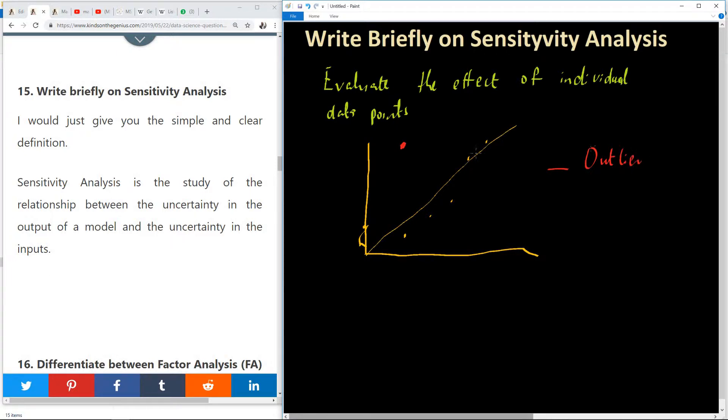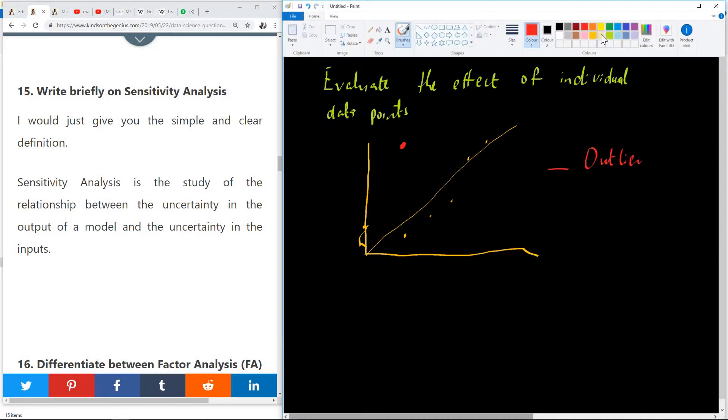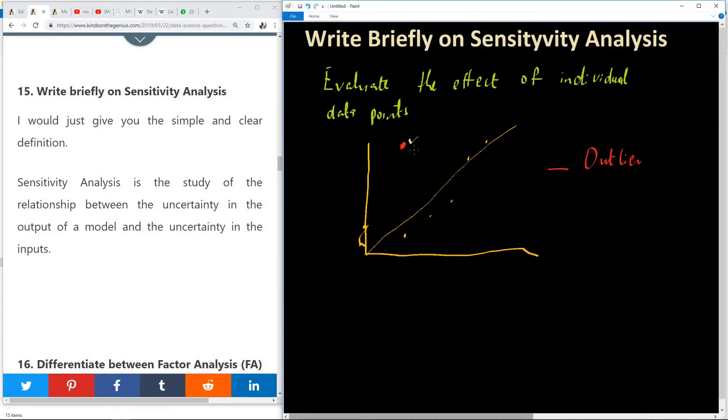In sensitivity analysis you want to check what is the effect of each of the data points as you add them to the model. We have this data point, we add the second data point, we add this. But once it gets to this outlier here you see that it changes the model so much.